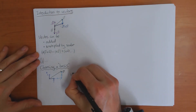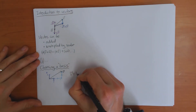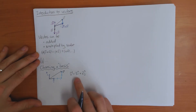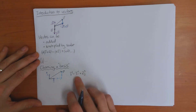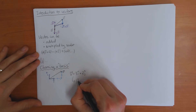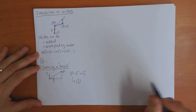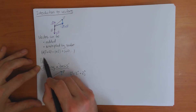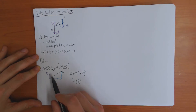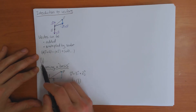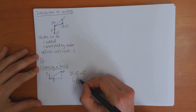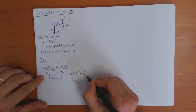So we can write v equals 3i plus 2j. Provided you always use the same basis, you can forget about what i and j are and just write this in terms of the numbers 3 and 2. When you see a vector represented as (3, 2), it means they've chosen some basis vectors i and j — or in three dimensions, three basis vectors — and the vector (3, 2) means three lots of i plus two lots of j.